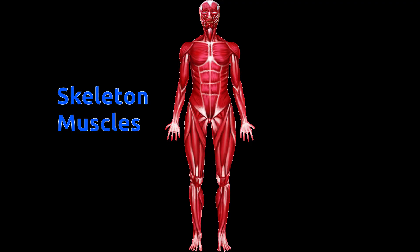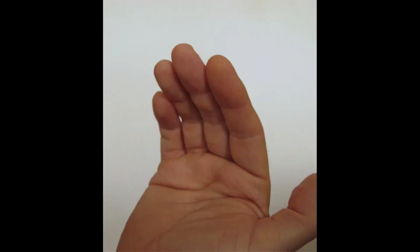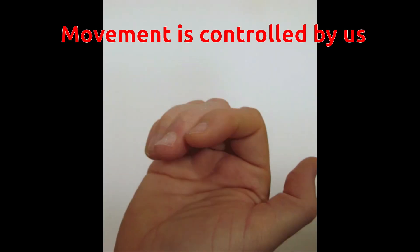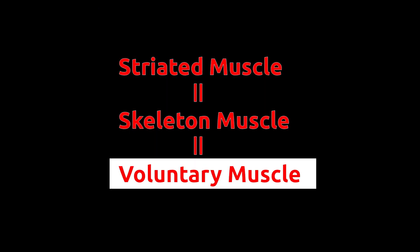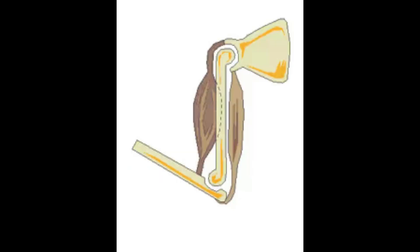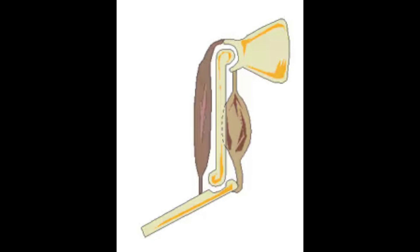Muscles in the leg, neck, forearm, thigh, finger, toe, etc. are made of striated muscle. We can move skeletal muscle on our will. For example, we can move our fingers. Because movement of these muscles is controlled by our mind, they are called voluntary muscles. Skeletal muscles apply pull force on bones and thus are responsible for movement.